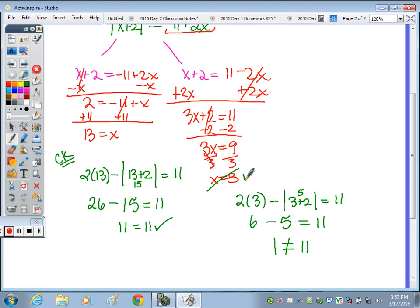So this doesn't check. We can reject this solution. It's extraneous, and x equals 13 would be the only solution for that equation.